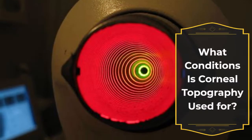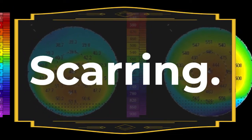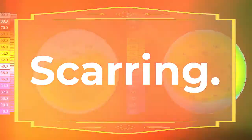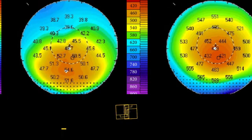What conditions is corneal topography used for? Trauma, injury, or infections can scar the cornea. This changes the shape of the cornea. A topography scan measures the distortion and its effect on vision.